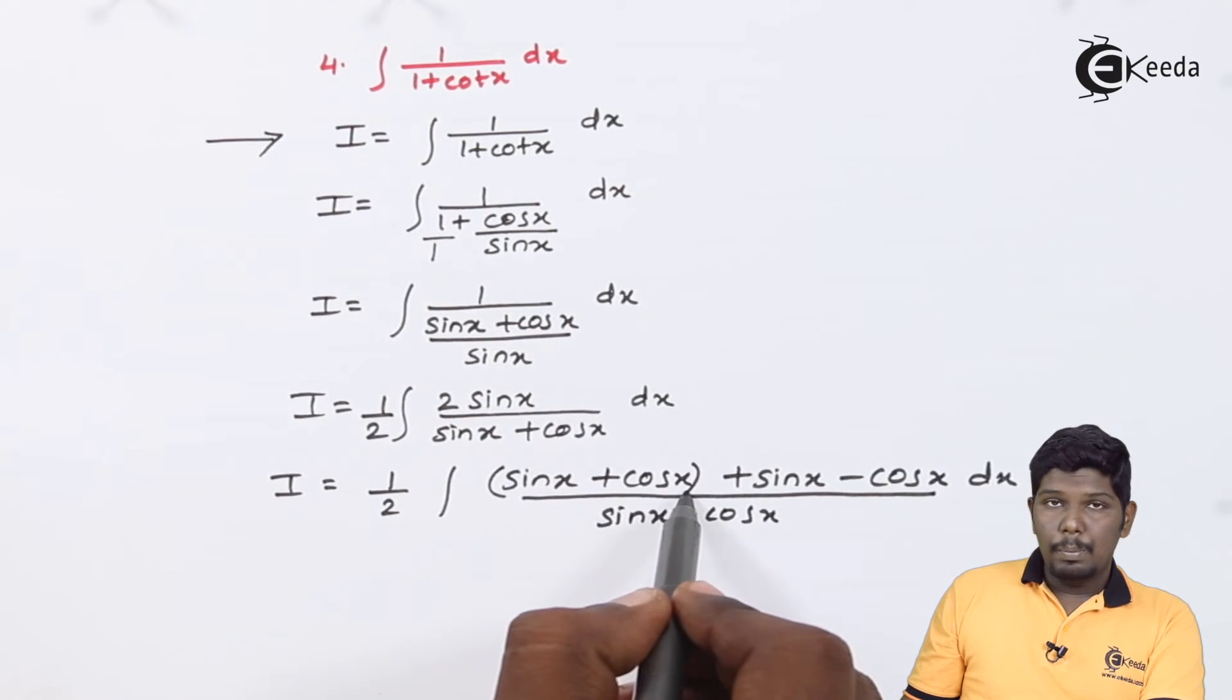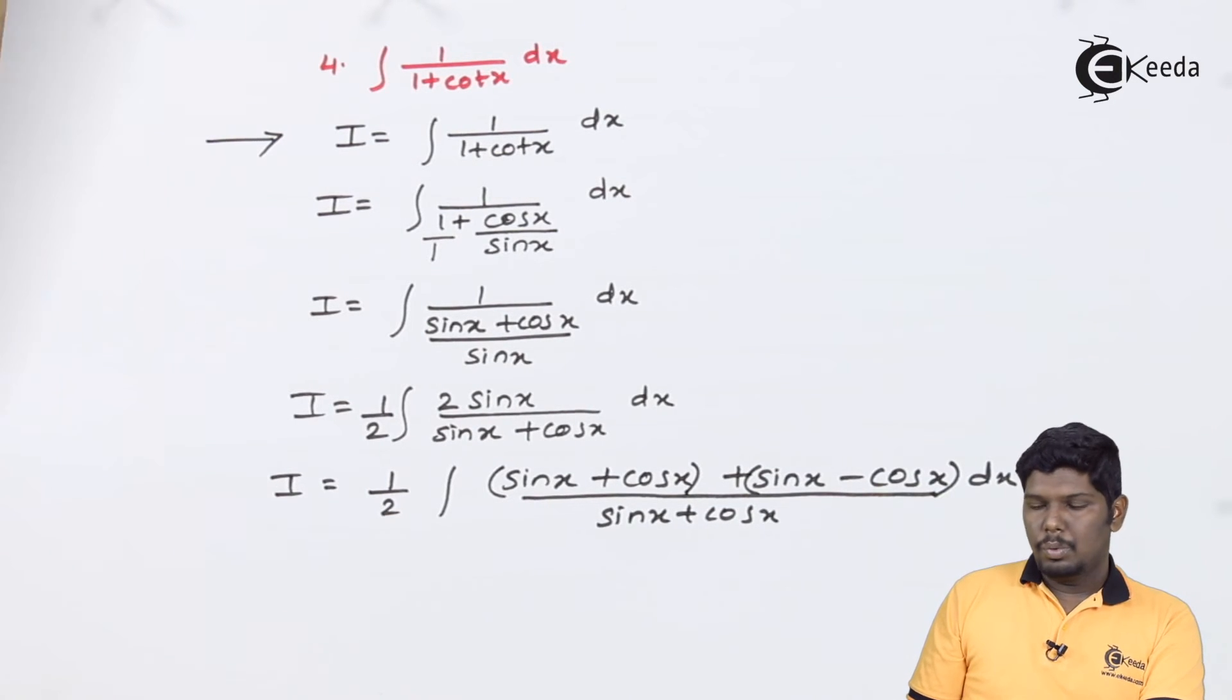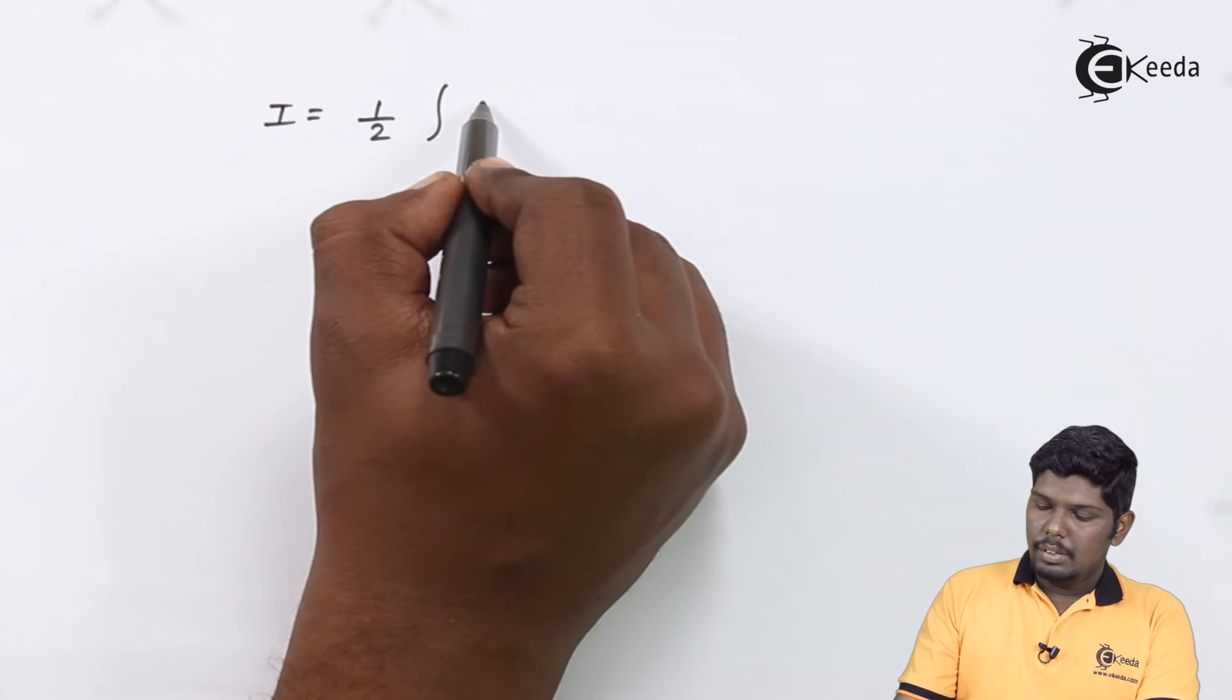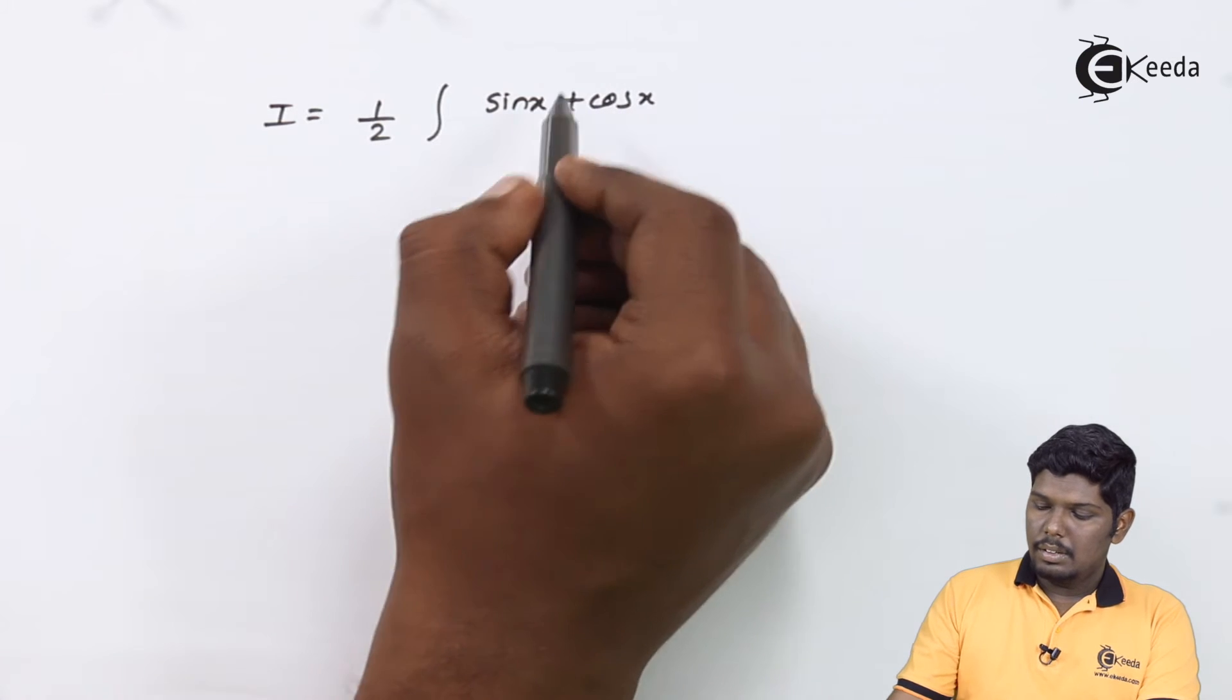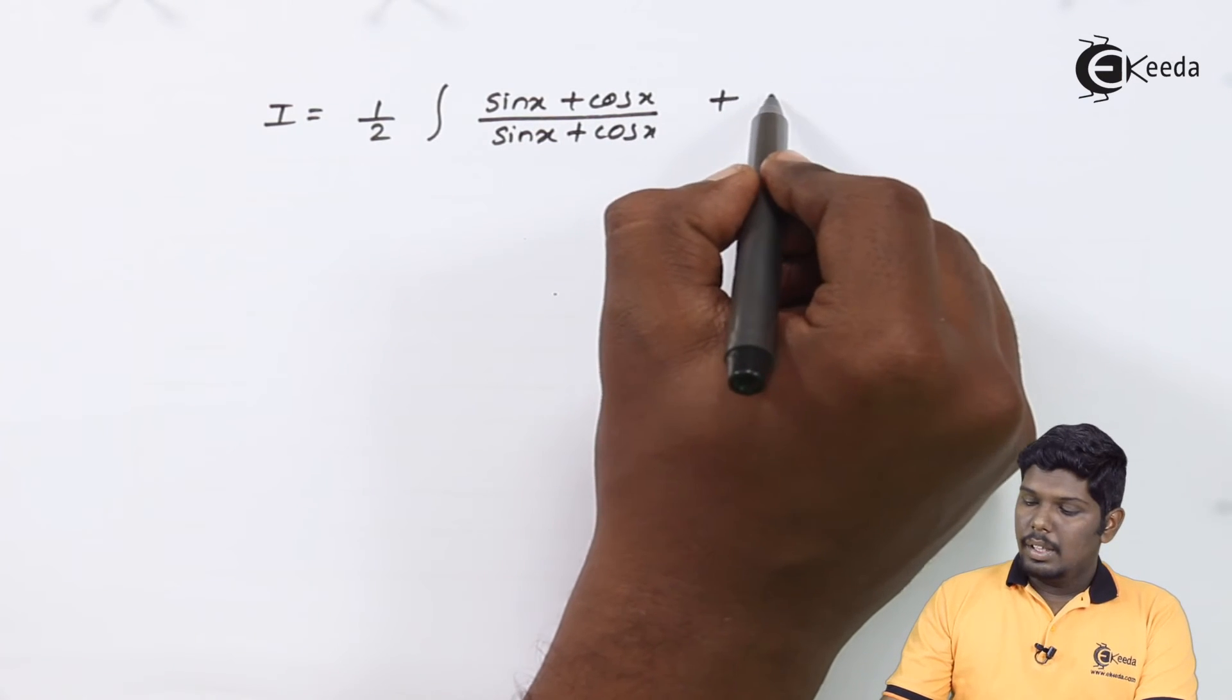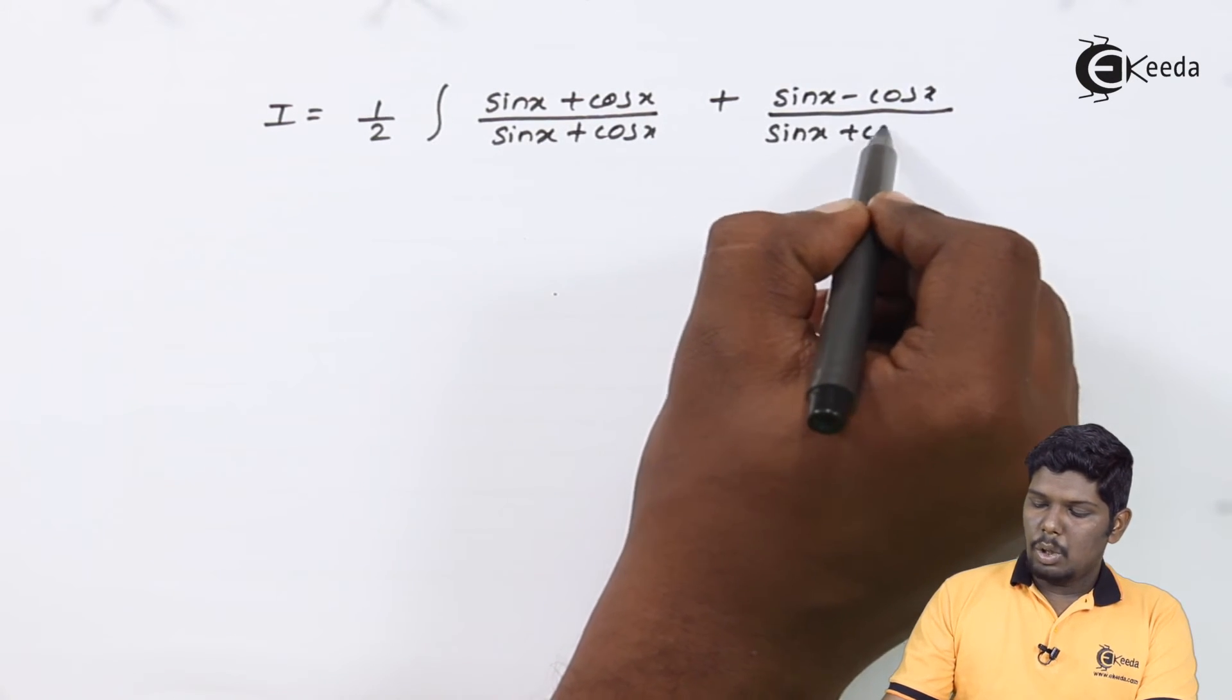Considering this as a first group and this as a second group, we will separate the denominator to both this term. This will give you I is equal to 1 upon 2 integral sin x plus cos x upon sin x plus cos x plus sin x minus cos x upon sin x plus cos x dx.